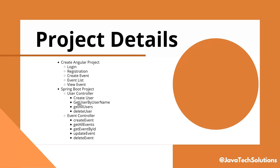The architecture involves two controllers: a User Controller and an Event Controller. The User Controller handles registering a user, getting a user by username, getting all users, and deleting a user. The Event Controller handles all event-related operations: create event, get all events, get event by ID, update event, and delete event. These are all the APIs we need to define under these two controller classes.